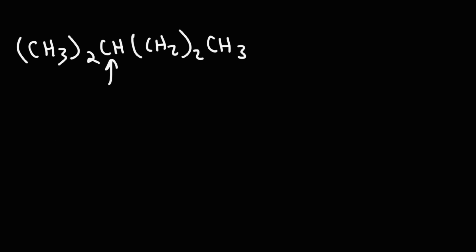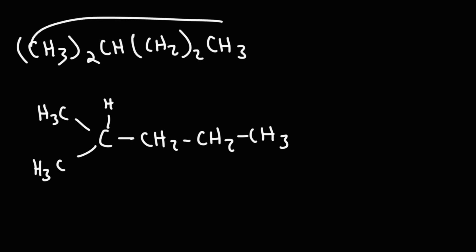So let's start with the CH carbon. So this carbon is attached to two methyl groups. Here's the first one. Here's the second one. Now, that carbon is attached to two methylene groups, and then the CH3. We do have a hydrogen here. So that's the expanded form of this condensed structure.